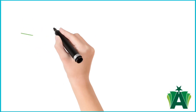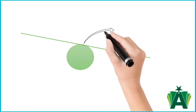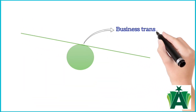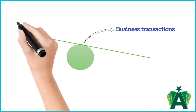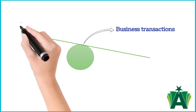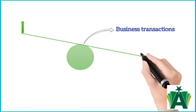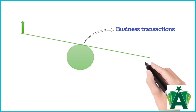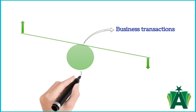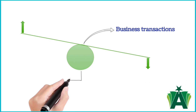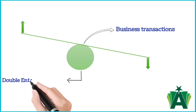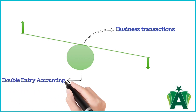Imagine a business transaction like a seesaw. On one end there's an increase in something, and on the other there's a corresponding decrease in something else. This fundamental principle forms the basis of double entry accounting.